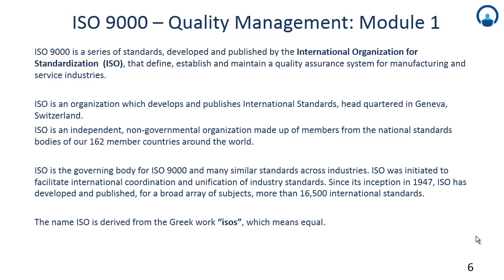The governing body here is the International Organization for Standardization, which is the ISO. All of these standards are therefore called the ISO series — ISO 9000, ISO 9001, ISO 9002 — these are different examples of standards we will study here. ISO is basically an organization which develops and publishes international standards. It is headquartered in Geneva, Switzerland, and is an independent, non-governmental organization made up of members from national standard bodies.